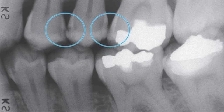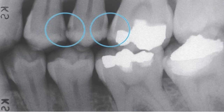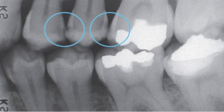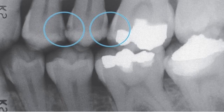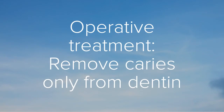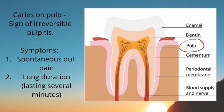As you can see, there is a lateral radiolucency on the tooth that is not deep enough to reach the pulp, so it is only on the enamel and somewhat on the dentine — and that is how you confirm your diagnosis. The treatment is operative treatment, meaning removing the caries only from the affected tooth, with no need to invade the pulp.